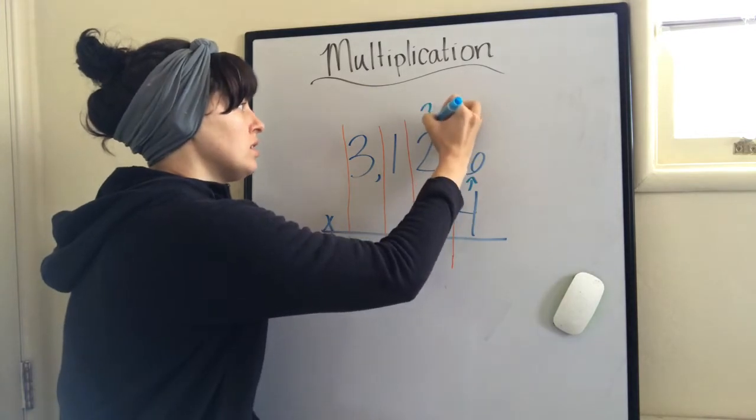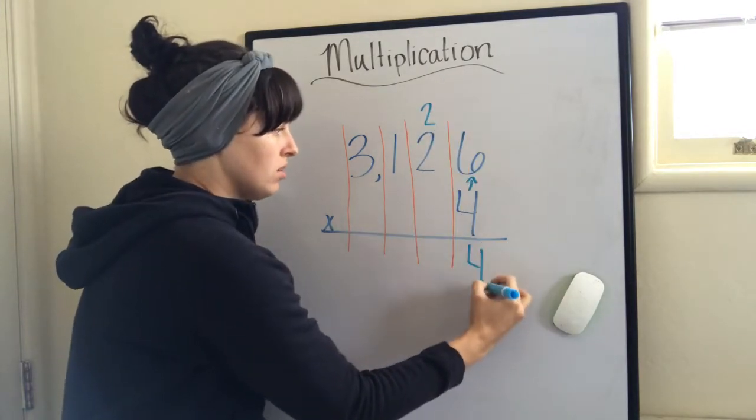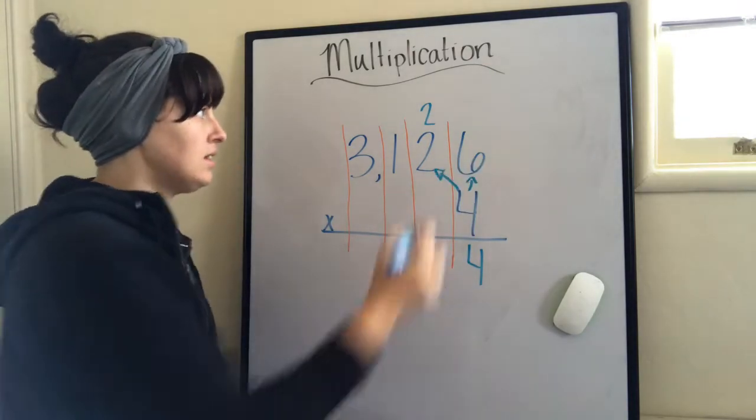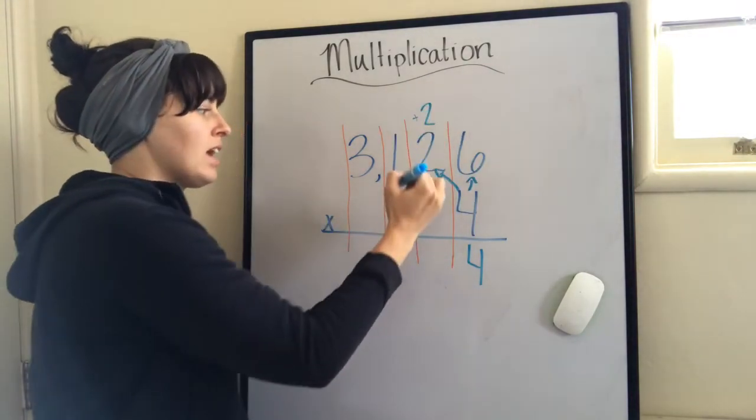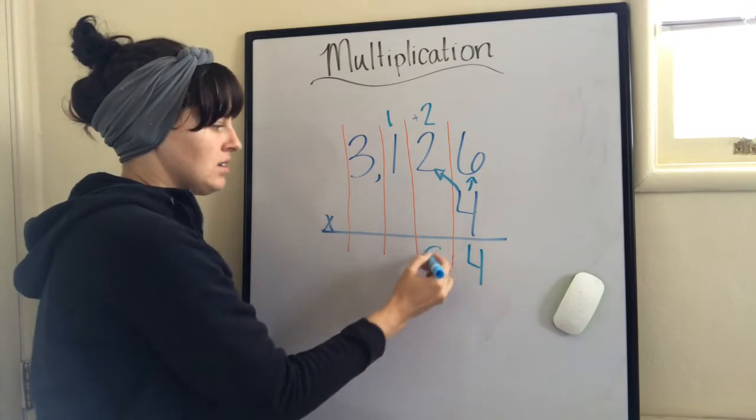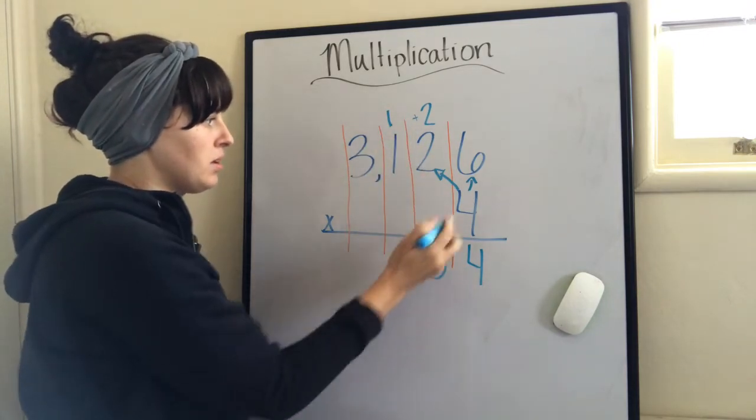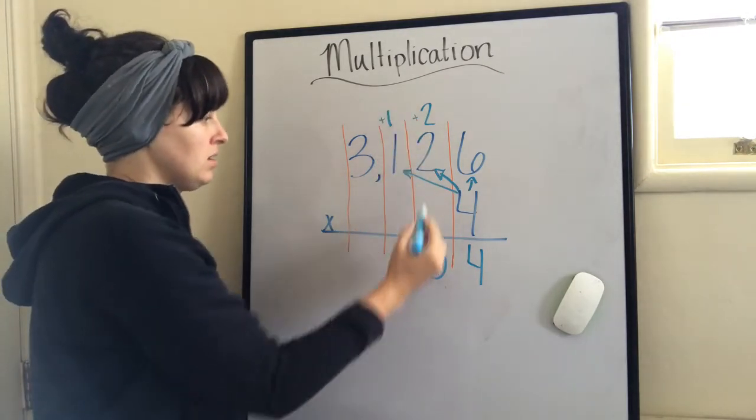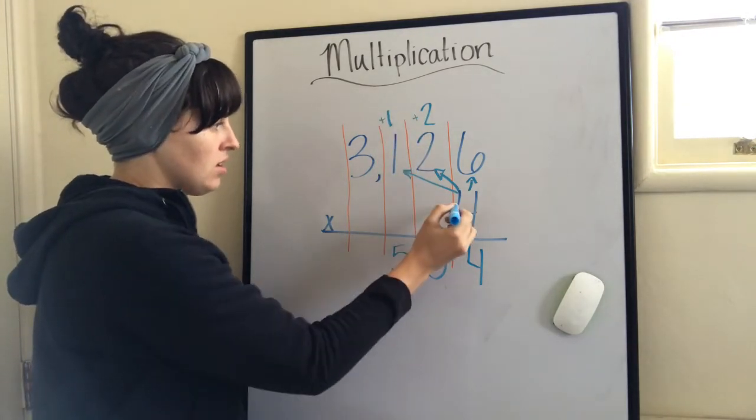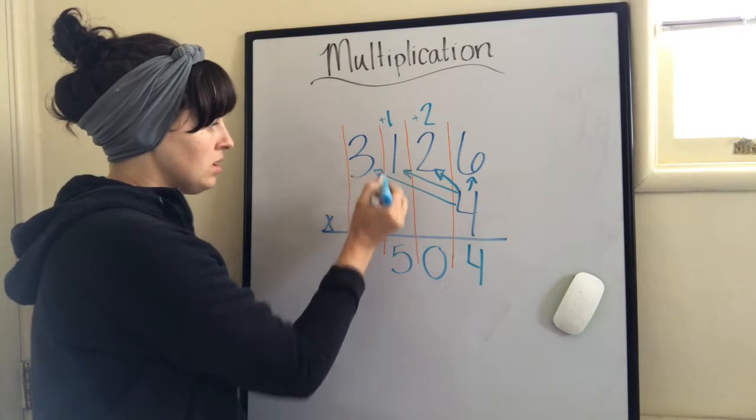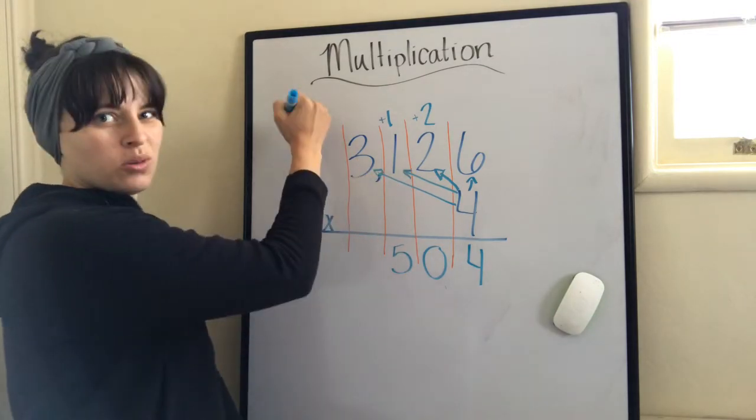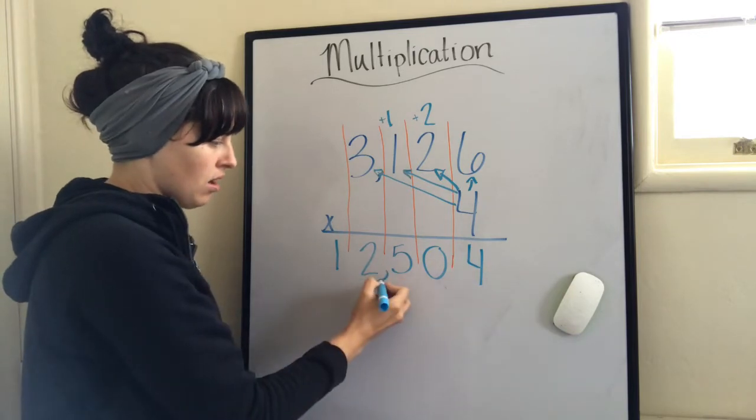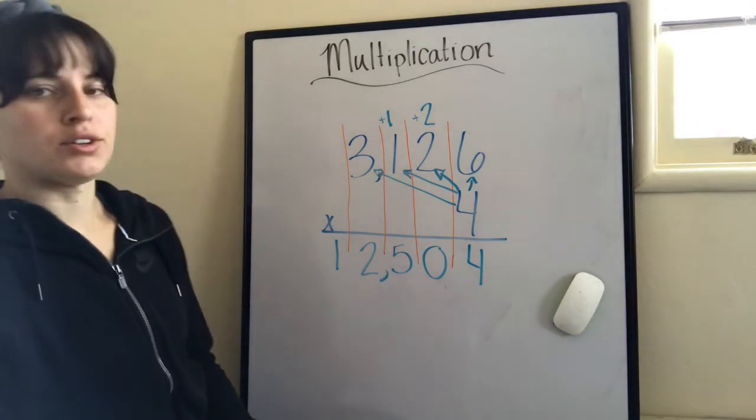So I write 24. 4 times 2, 8 plus 2 is 10. I split up my number. 4 times 1 is 4. Plus 1 is 5. 4 times 3 is 12. So now I have nowhere to put my 1, so I can just write 12. Comma. 12,504.